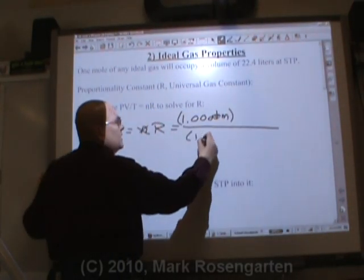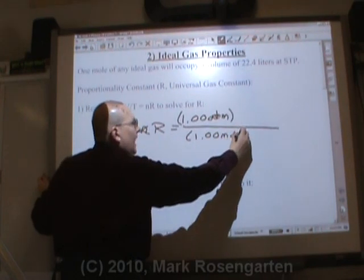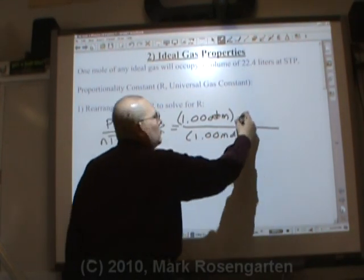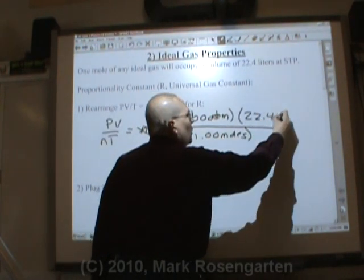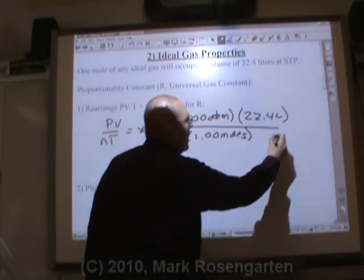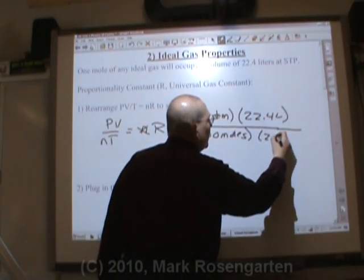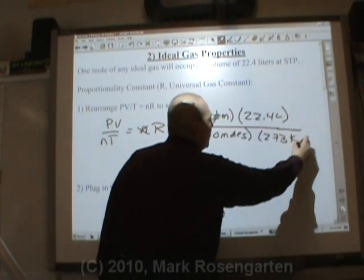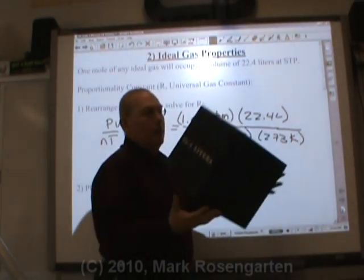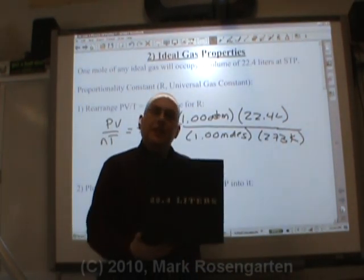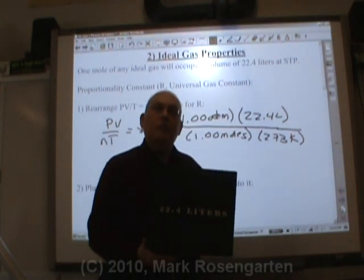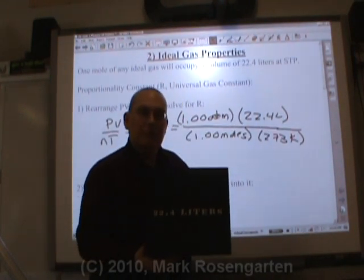We know that at a pressure of one atmosphere, 1.00 moles of gas is going to occupy 22.4 liters, the molar volume, at a temperature of 273 Kelvin. Why? Because this represents the volume of one mole of gas, STP, standard temperature and pressure.